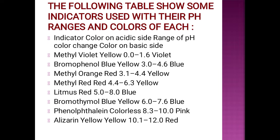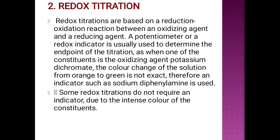In acid-base titration, many indicators are used depending on their pH range. For example, methyl violet is a yellow color indicator used in this process, with a pH range of 0.0 to 1.06, and its color changes to violet. Redox titration is based on oxidation-reduction reactions between an oxidizing or reducing agent. A potentiometer or redox indicator is used to determine the endpoint. For example, potassium dichromate causes a color change from orange to green, so an indicator such as sodium diphenylamine is used. Some redox titrations do not require an indicator because the titrant itself acts as one.